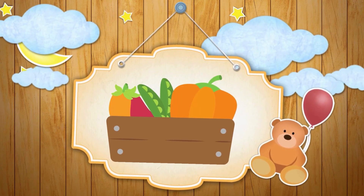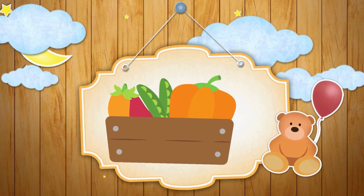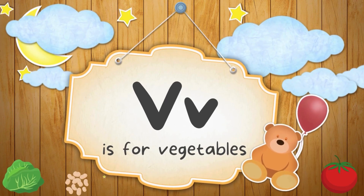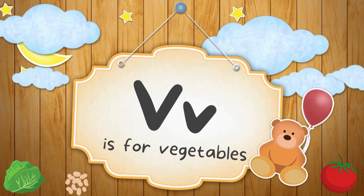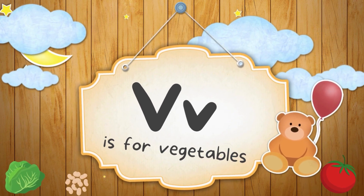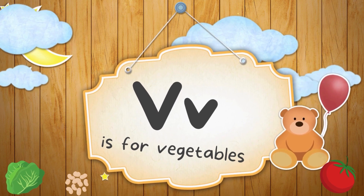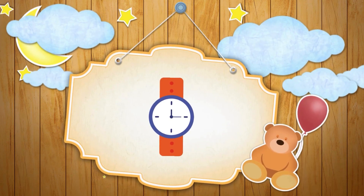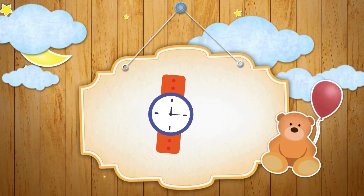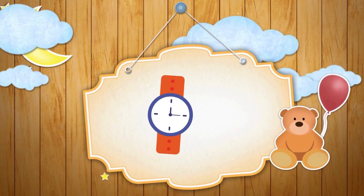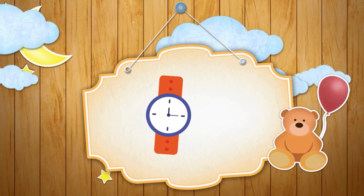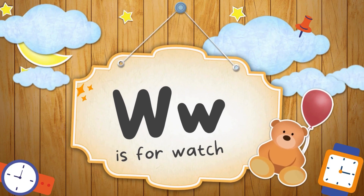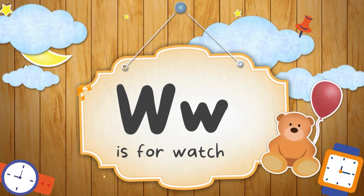See the image and guess the alphabet. V is for Vegetables. See the image and guess the alphabet. W is for Watch.